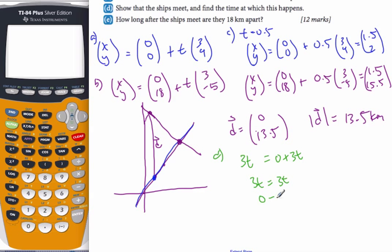Well, 0 equals 0, so t is anything. Let's check with the y value. I have a feeling I'm going to get a t value here, because t can be anything. Let's see what the y value gets then. So I get 0 plus 4t equal to 18 minus 5t. 9t equals 18, and so t equals 2.